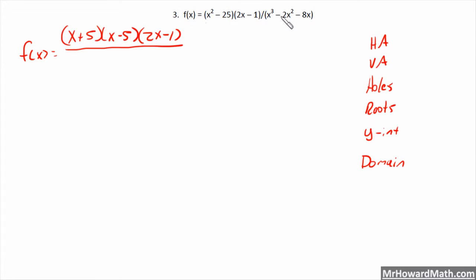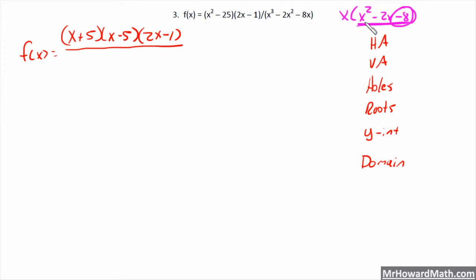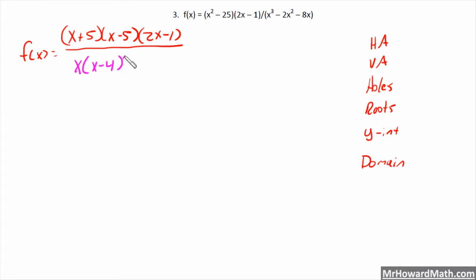For the denominator, factoring off to the side, we have a greatest common factor of x, which leaves us with x² - 2x - 8. We then factor that further: we want numbers that multiply to -8 and add to -2, so that gives us (x-4)(x+2). So altogether the denominator is x(x-4)(x+2).